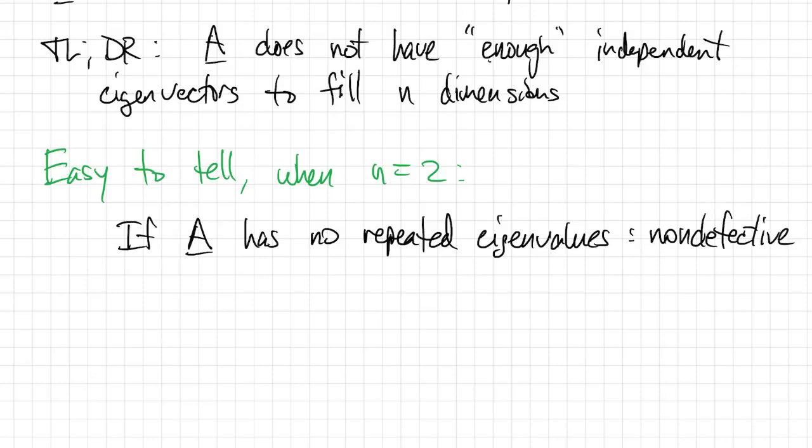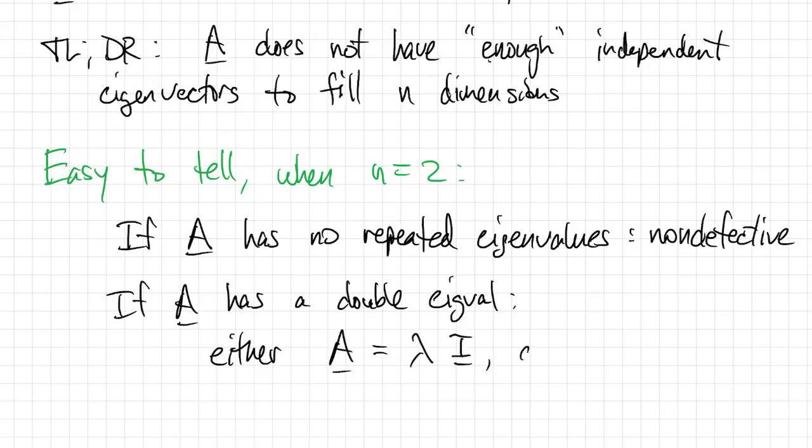If a 2×2 matrix has a repeated eigenvalue, so you have one double eigenvalue, then there are two possibilities. Either A is a multiple of an identity matrix, or A is defective.